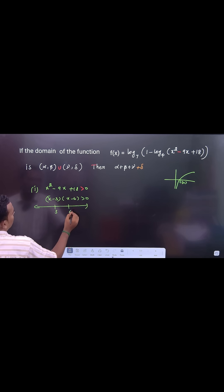3 and 6. Start with a positive, negative, positive. So therefore x belongs to (-∞, 3) ∪ (6, ∞). We need the product is greater than 0, right? This is the first thing. Second thing you need: actually log base 7 is there.